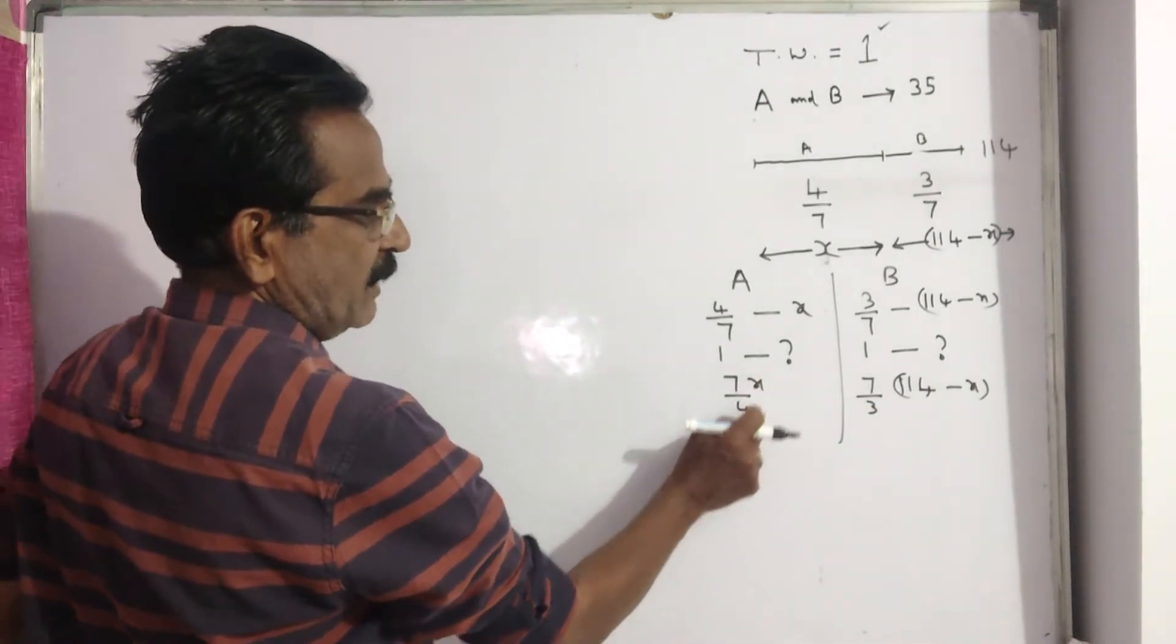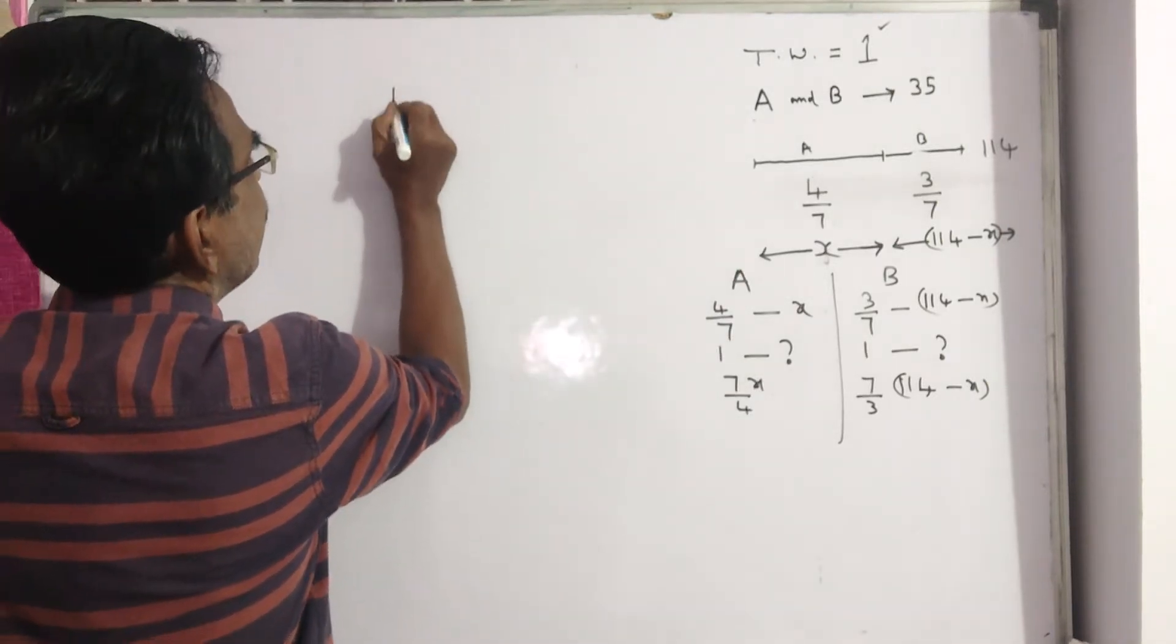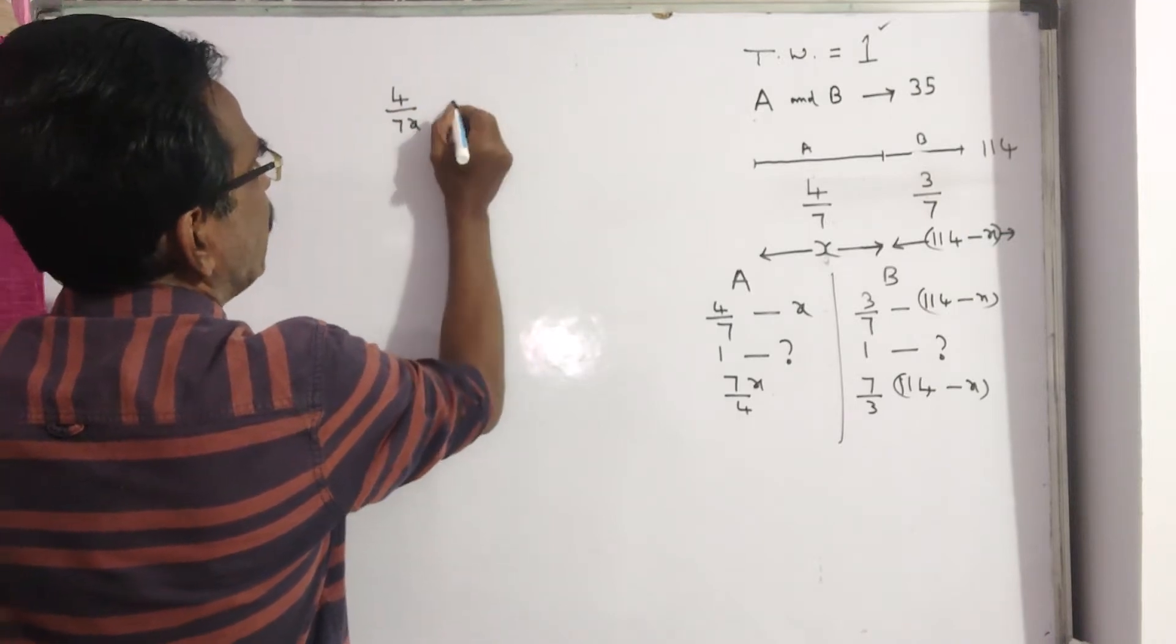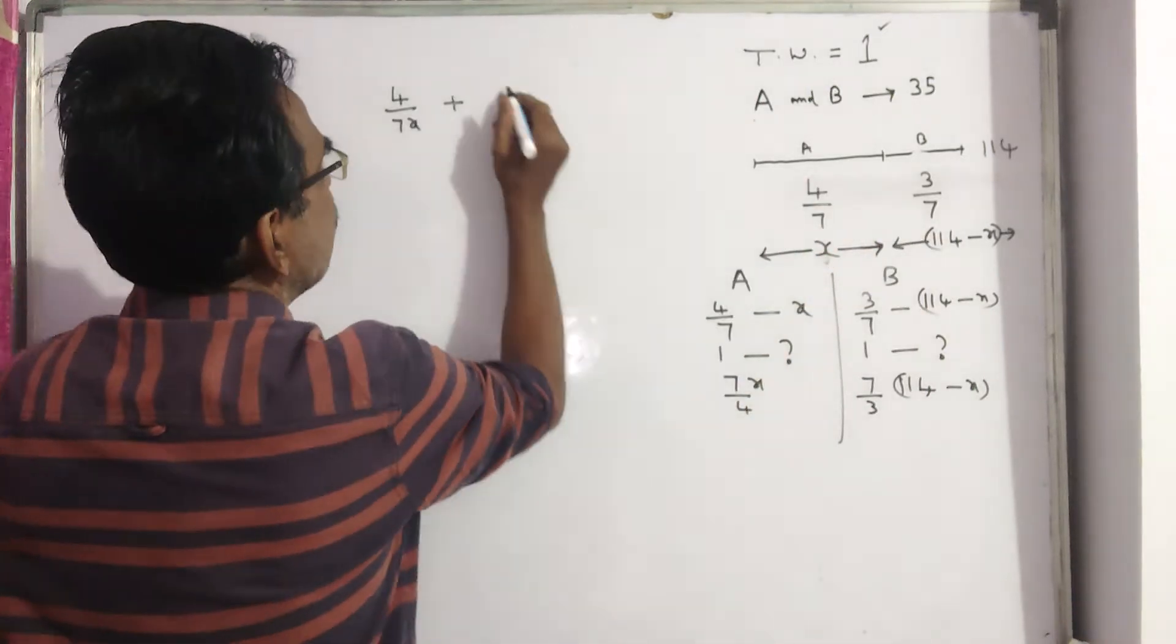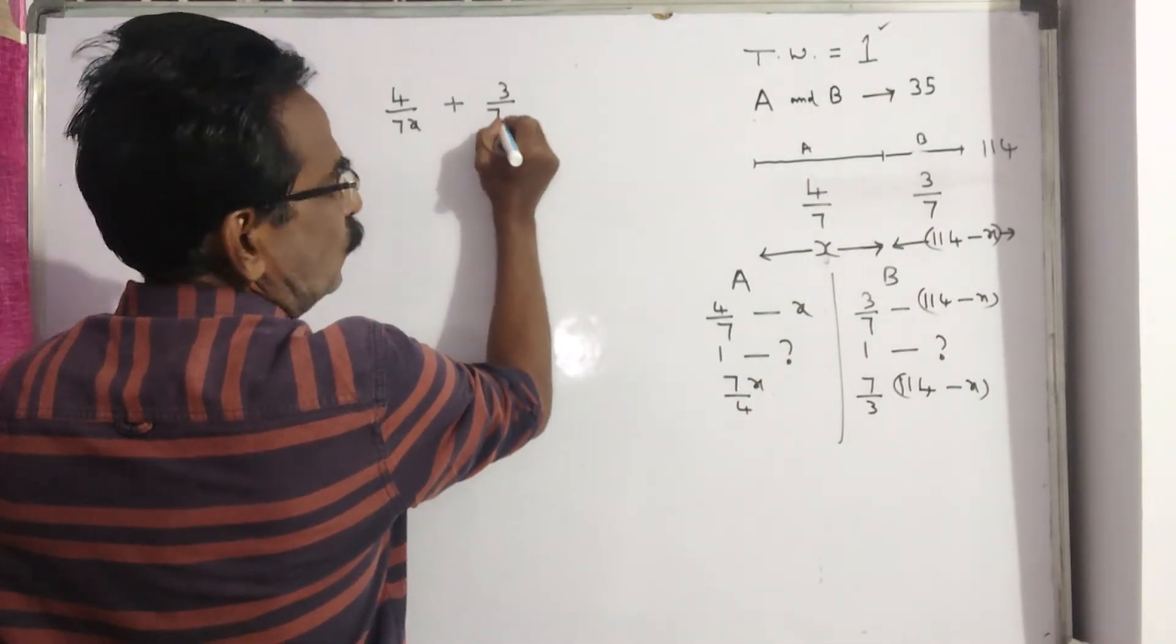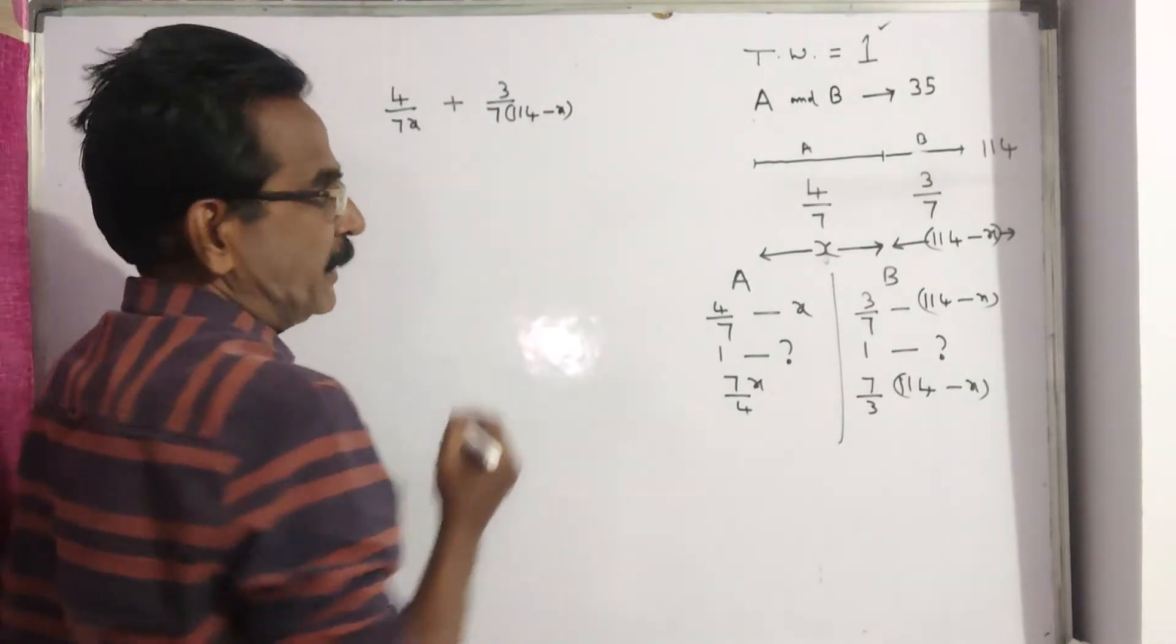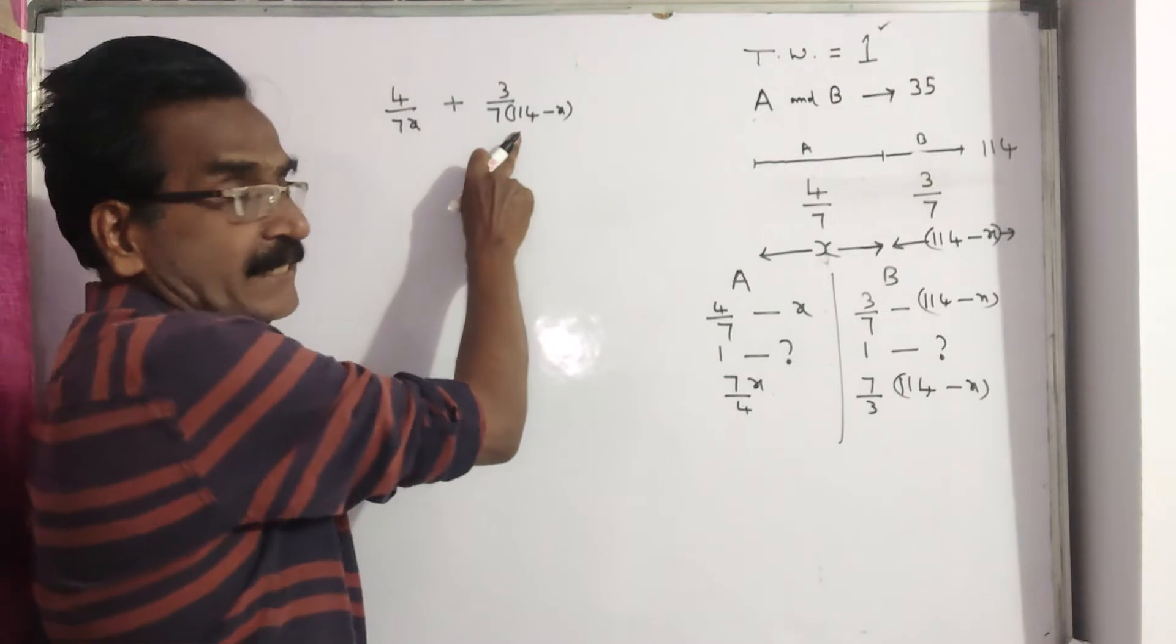A can complete the work in 7x by 4. So A's days work: A can do 4 by 7x work per day. Whereas B can do 3 by 7 into 114 minus x work per day. So this is A's days work, this is B's days work.